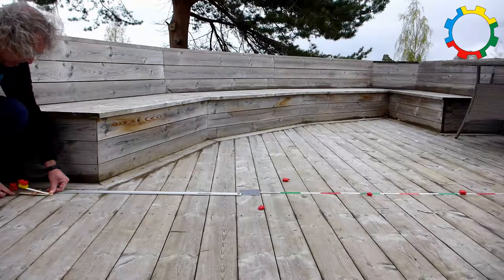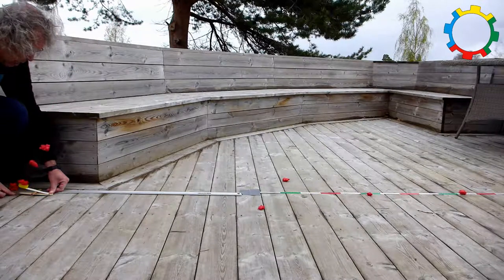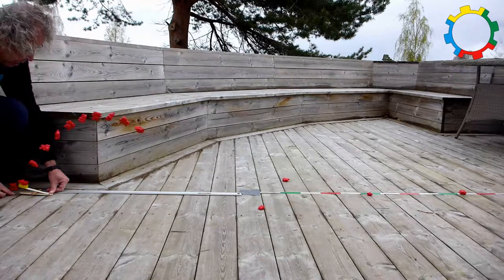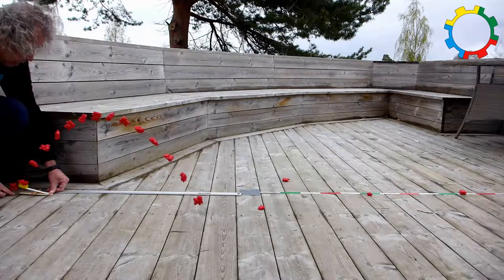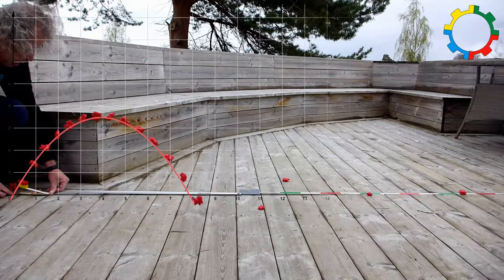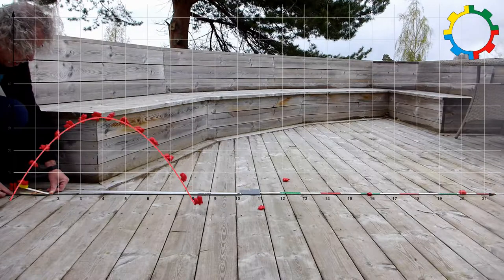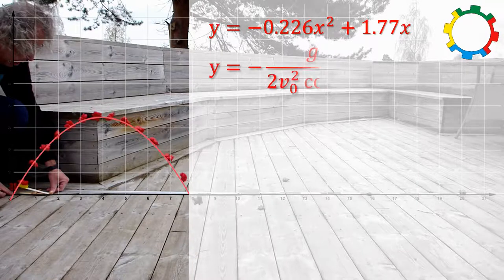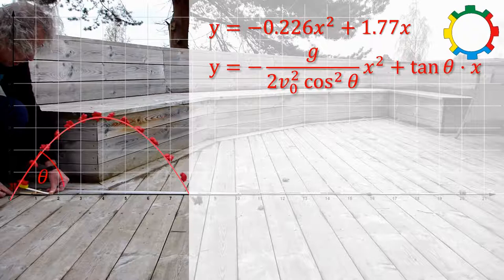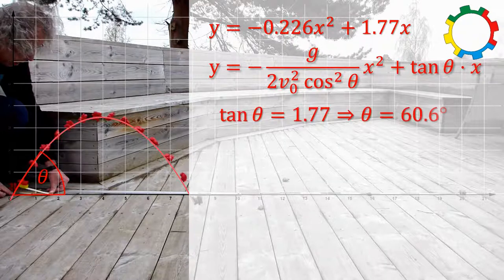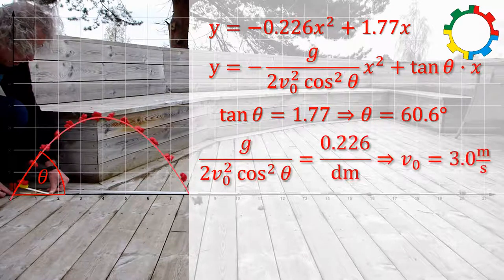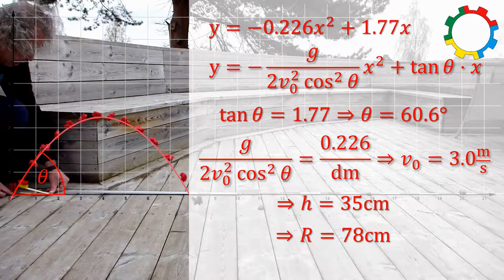We can do the same exercise with a heavier bear. The trajectory is a parabola as well, and by comparing the empirically found data with the theoretical equation, we can calculate the launch angle, the initial velocity, the height, and the range.